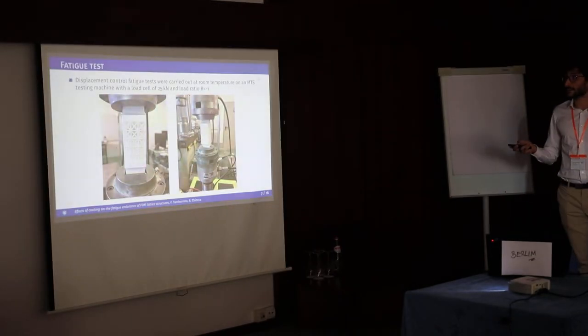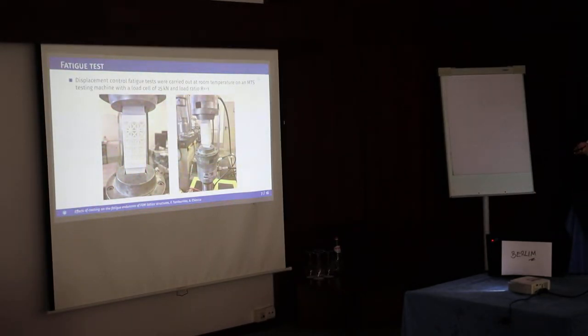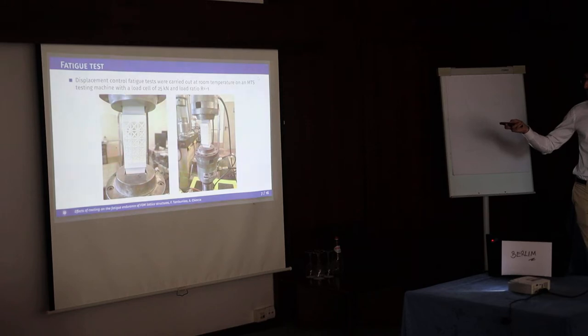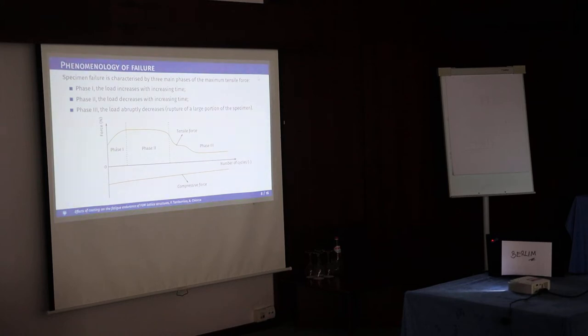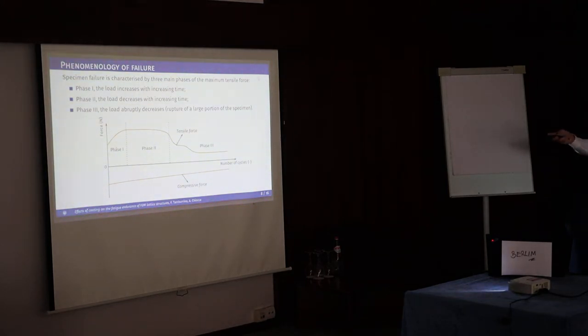Let's go directly to the fatigue test. Fatigue tests are performed on the MTS hydraulic machine with a 25 kN load cell. At the moment, the results I'm going to present are only for fully reversed fatigue test - R equal to minus one. I didn't mention this, but the fatigue tests at the moment are only displacement control. Mainly because of the machine we're using, it's quite difficult to control the force while testing a structure like this. The load cell has a range too big to control such loads - we're speaking about kilonewtons. We tried, but it was quite difficult, so we went back to displacement control fatigue test.